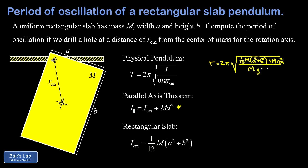Substituting into the period formula, we divide by m·g·r_cm. The masses cancel, and multiplying numerator and denominator by 12 to clear the complex fraction gives us, in the numerator, a² + b² + 12·r_cm², and in the denominator, 12·g·r_cm. Note that r_cm is simply the distance between where we drilled the hole and the center of the slab.